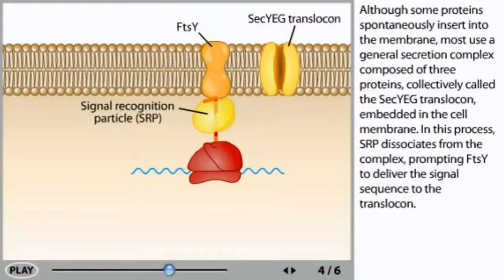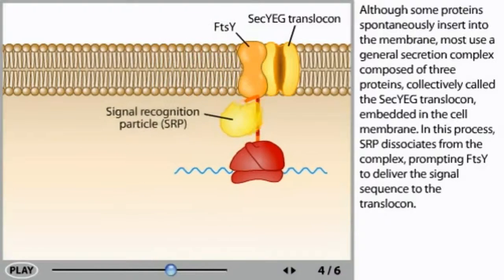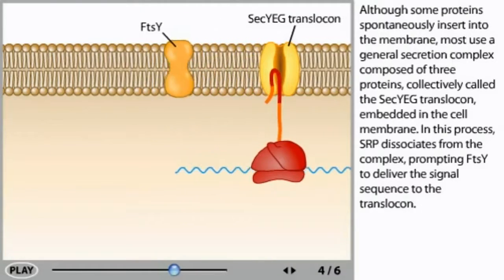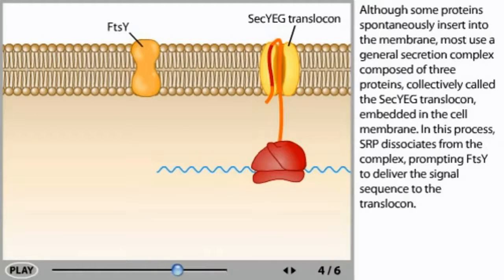In this process, SRP dissociates from the complex, prompting FtsY to deliver the signal sequence to the translocon.